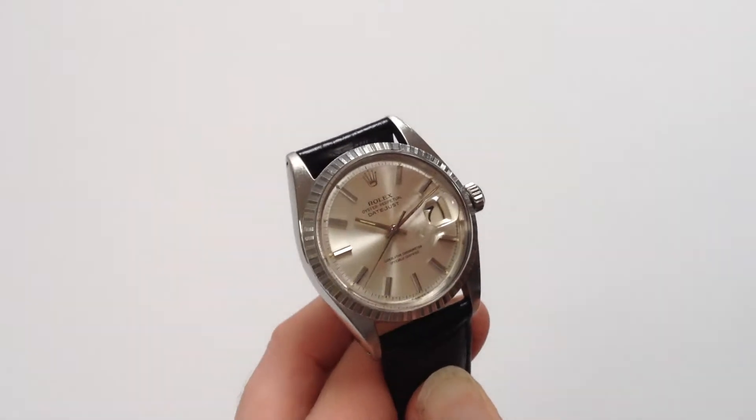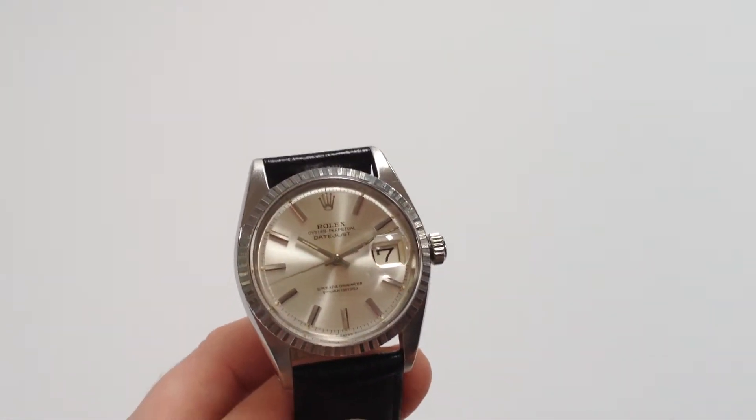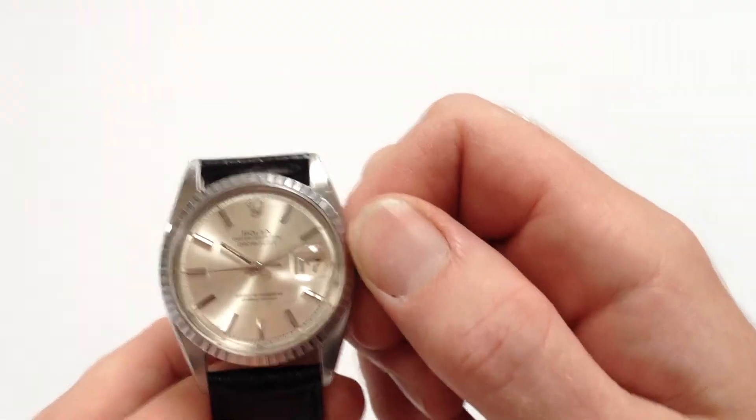As an automatic watch it will wind itself as it's been worn. However, if the watch is laying dormant for any period of time and needs to be started, this can be achieved by turning the Oyster crown.